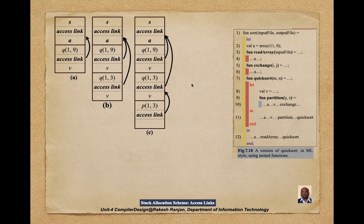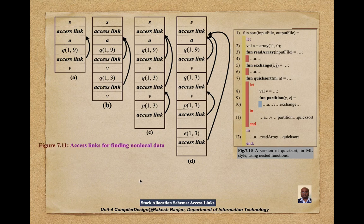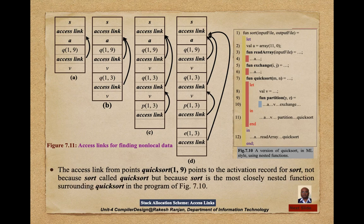In this example, the exchange function, partition function, and quicksort function each have access links. The array a belongs to the sort function s, and v is the partition value. In each case, the access link connects the function's activation record back to the enclosing scope. This is the basic idea of how access links are used, allowing each function to access common values or variables.